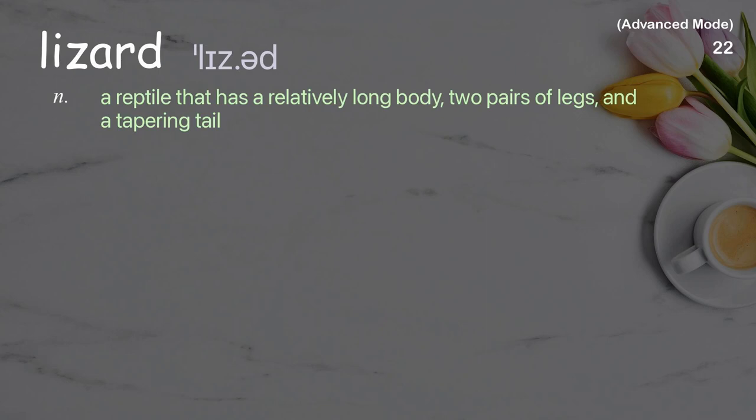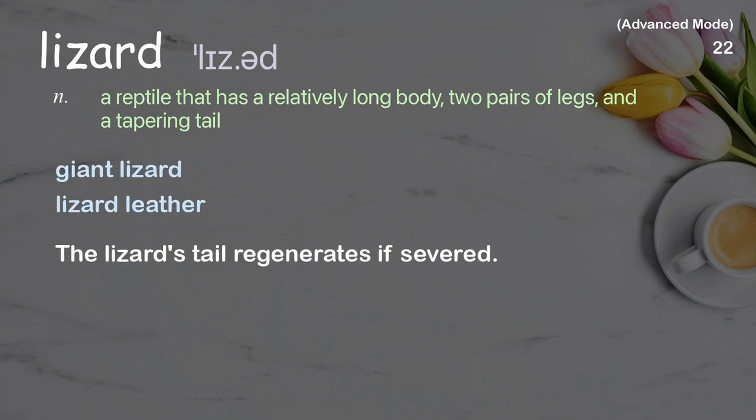Lizard: a reptile that has a relatively long body, two pairs of legs, and a tapering tail. Examples: giant lizard, lizard leather. The lizard's tail regenerates if severed.